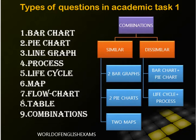A table type may give you many figures, such as sales of a product in various countries, and you need to illustrate the main significant points. The last type is combinations — either similar combinations like two bar graphs or two pie charts, or dissimilar combinations like a bar chart paired with a pie chart. We are going to check out each question type with proper illustrations and interpretation methods in further videos.